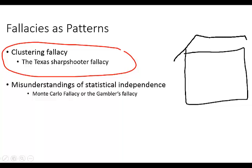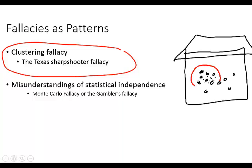There's a barn, and there's a shooter. The shooter shoots at the wall of the barn — he just fires off. He walks up to the barn, makes a circle around a cluster, and calls his friends over to see what an excellent shot he is. So clearly there's a problem here. After the fact of finding the cluster, he draws the circle around it and then claims that he is a sharpshooter because he managed to concentrate his shots within this circle.